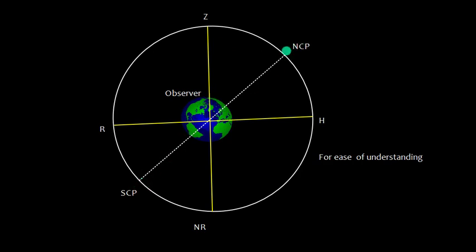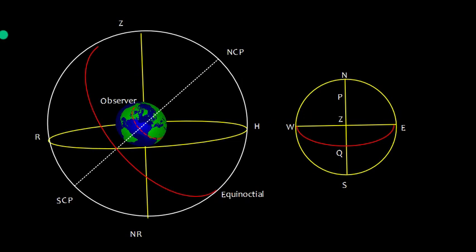The North Celestial Pole and South Celestial Pole are represented like this. This is the observer-centric system, and what we are trying to do is mix or integrate the observer-centric system with the equinoctial system. Looking at the rational horizon — it is a great circle — when we take out this great circle, there will be two points: North and South, and two more points: East and West. An observer is at the center.